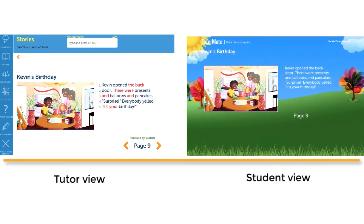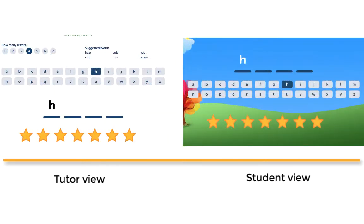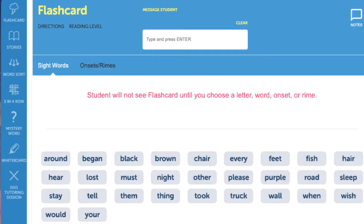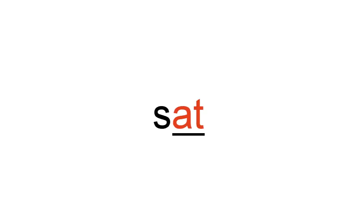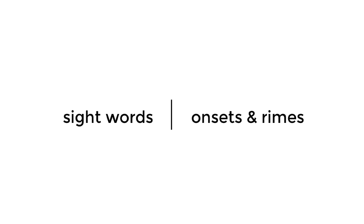Now let's take a look at the activities in the tutoring application. The first activity in the sequence is flashcards. Flashcards has two functions: it gives students the opportunity to practice sight words, and it tests students' knowledge of words that have similar beginning or ending sound patterns, also known as onsets and rhymes. Practicing sight words in onsets and rhymes will help your student increase reading proficiency.